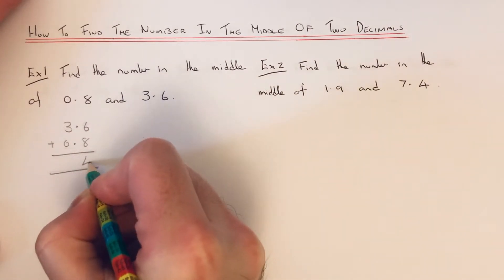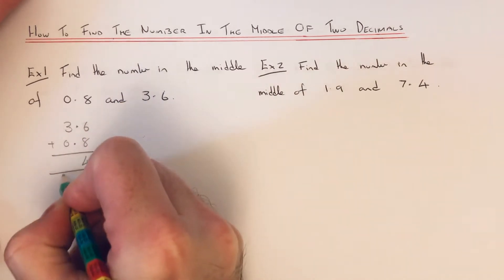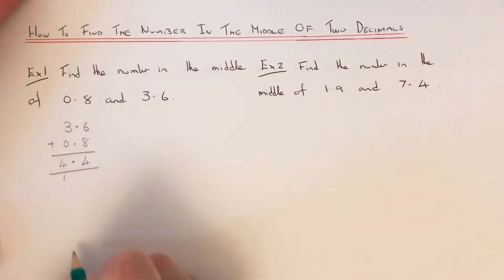So 8 add 6 is 14. 3 add 1 is 4. And then we just need to divide this answer by 2 or half it.